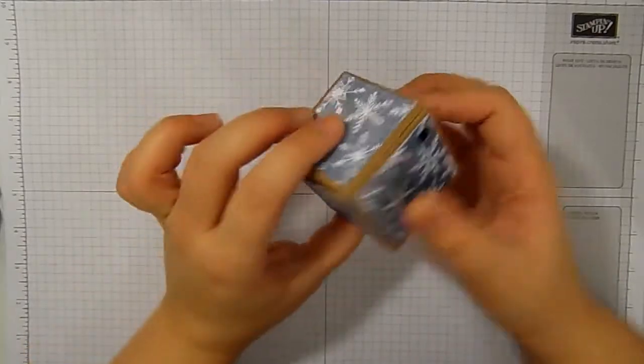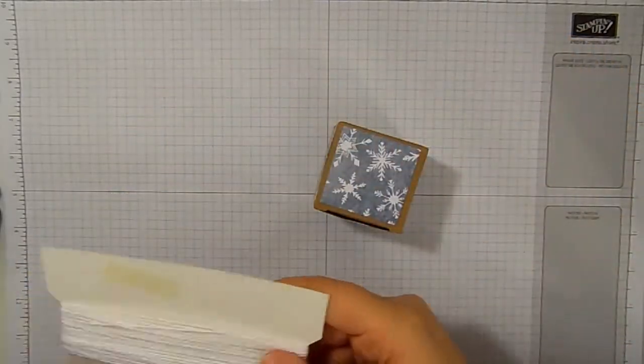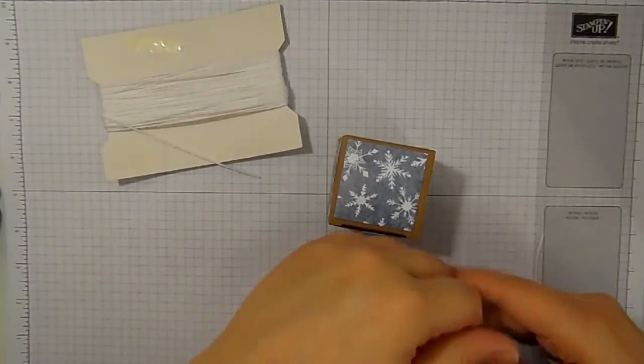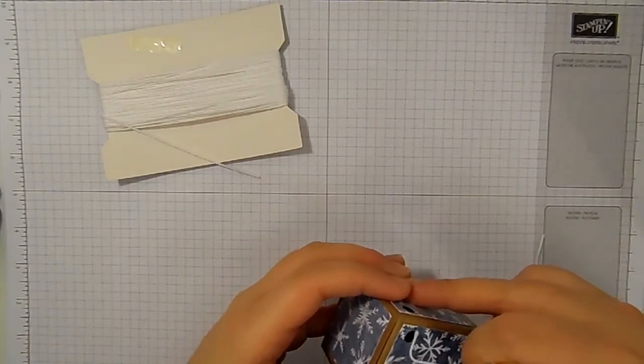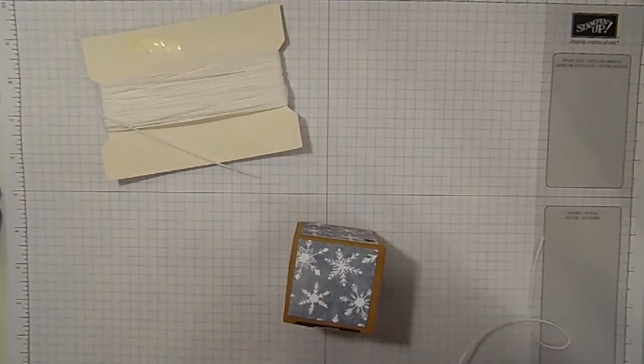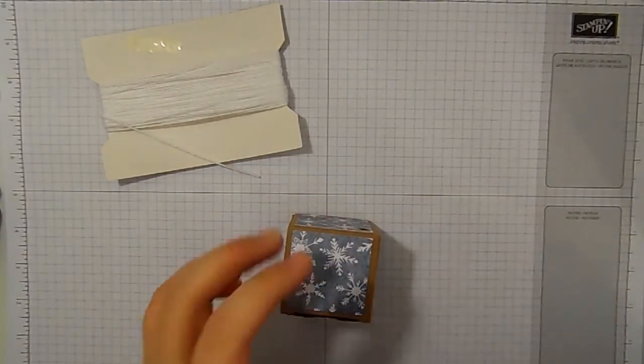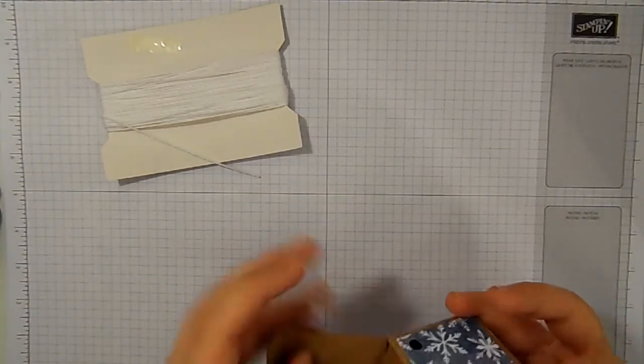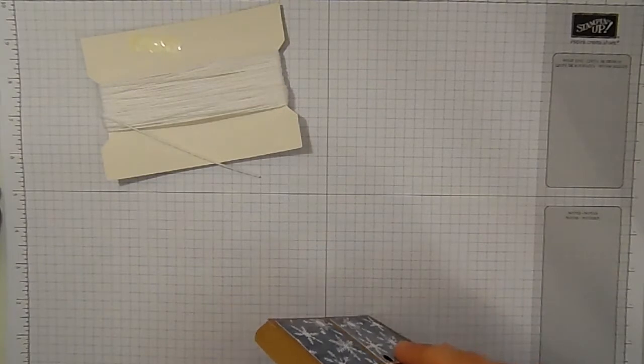Mine are going to hang like this. So let's get our piece of Whisper White out. So what I'm going to do is I'm going to thread my Whisper White through. Oh this might have been easier to do when it was closed as well. Let's open the box. That might work better.